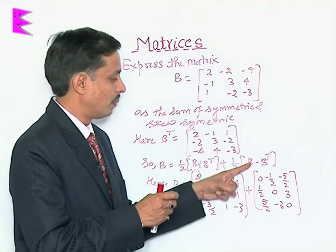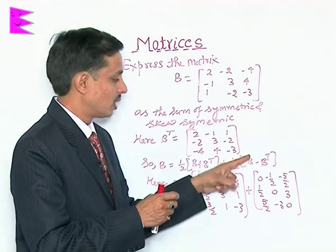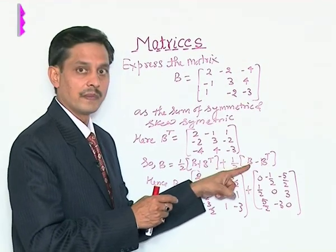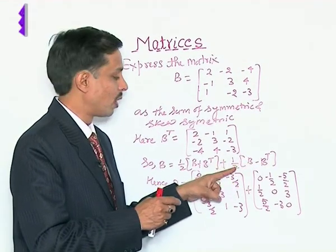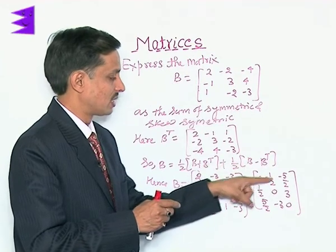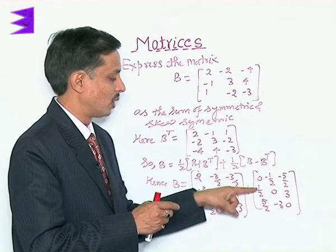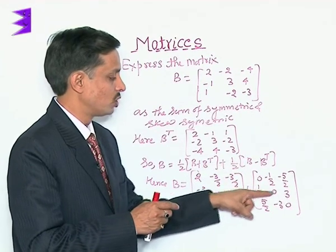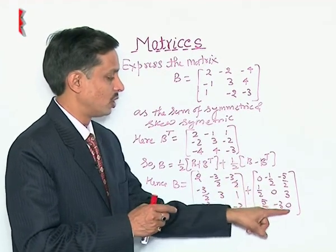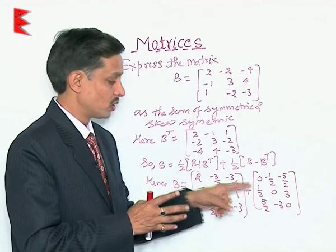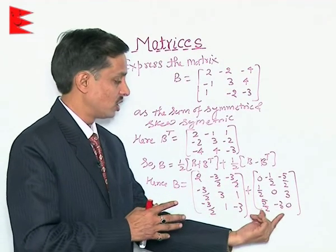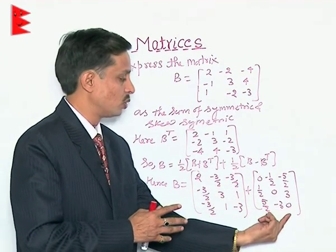And when B transpose is subtracted from B and multiplied by half, we obtain the skew-symmetric part: [0, -1/2, -5/2; 1/2, 0, 3; 5/2, -3, 0]. This result is clearly skew-symmetric.